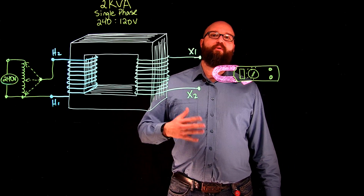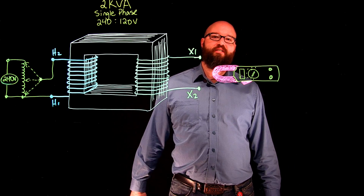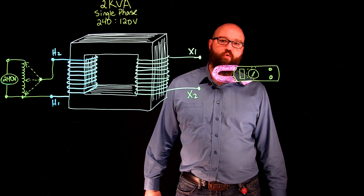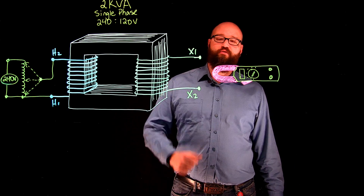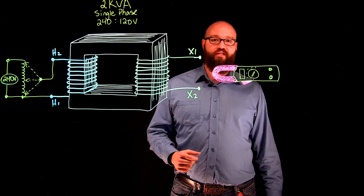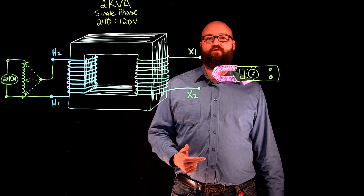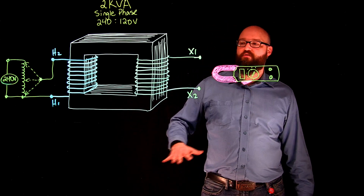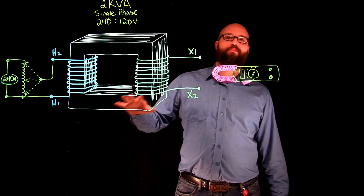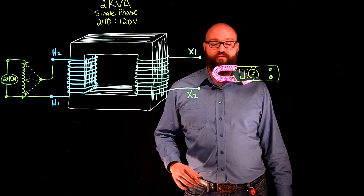In a previous video we went through and did an open circuit test to determine the core losses of a transformer. You can also use a short circuit test to perform copper loss tests in a transformer as well. We're going to be using this to determine the impedance voltage of a transformer.